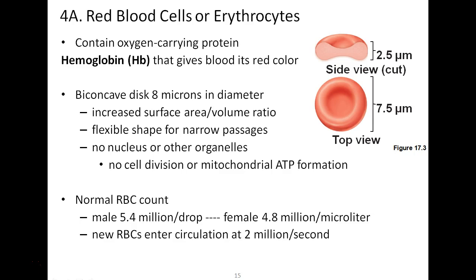Because erythrocytes lack a nucleus and organelles, they cannot take part in cell division or mitochondrial ATP formation. They are sometimes called 'empty bags of hemoglobin' because the red blood cell's main job is to carry the protein hemoglobin. The iron at hemoglobin's core gives it a red color. These red blood cells are biconcave in shape, about eight microns in diameter, giving increased surface area and a flexible shape for narrow passages. This biconcave structure also allows them to stack in a line called rouleau for easier passage through capillaries.